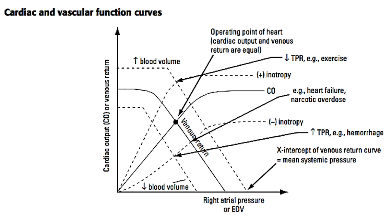The downsloping curve labeled venous return indicates how venous return decreases as right atrial pressure increases. These data are obtained experimentally, and they show that if you raise the right atrial pressure without changing any other pressures in the heart, this decreases venous return back to the heart, because venous return requires a low right atrial pressure to move blood back to the heart. These two curves — the vascular function curve and the venous return curve — are affected by different things, which is why we need two different curves to dictate what the cardiac output will be.